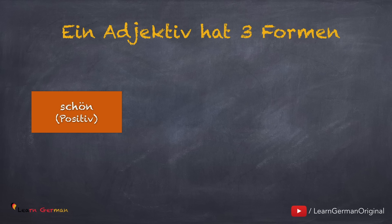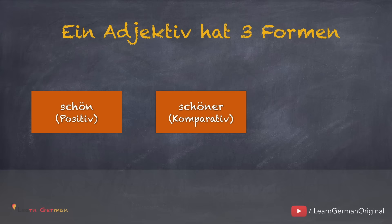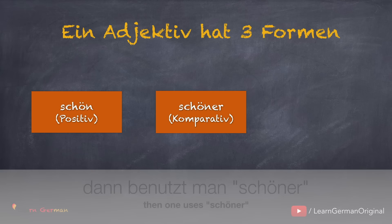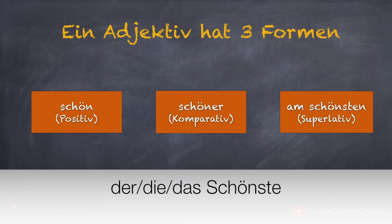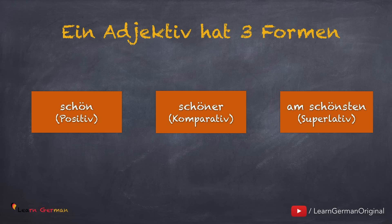So, schauen wir uns mal an, was diese Formen sind. Ein Adjektiv hat drei Formen. 'Schön' — diese heißt die Positivform oder die Grundform von dem Adjektiv. Wenn man zwei Sachen vergleicht, dann benutzt man 'schöner' — diese Form ist die Komparativform. Und wenn man mehr als zwei Sachen vergleicht, dann sagt man 'am schönsten' — das ist die Superlativform. Als Superlativ kann man auch 'der, die oder das Schönste' benutzen, aber das lernen wir in der nächsten Lektion.